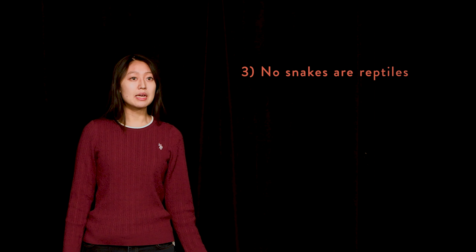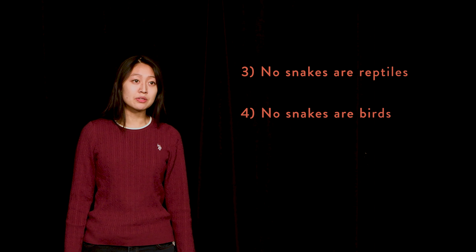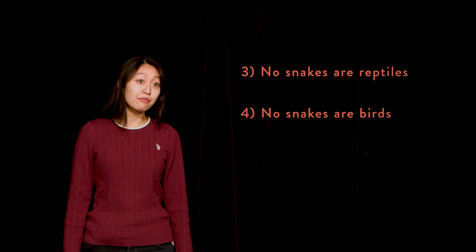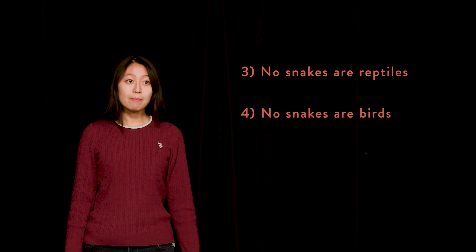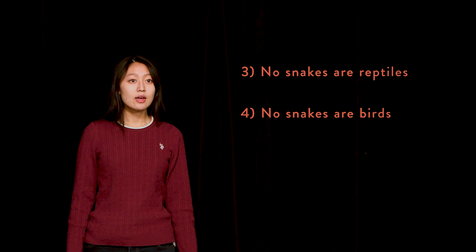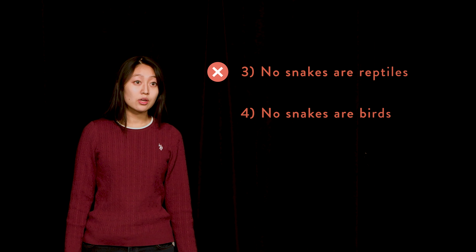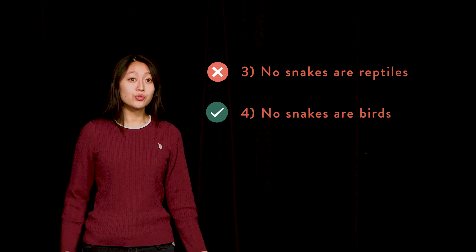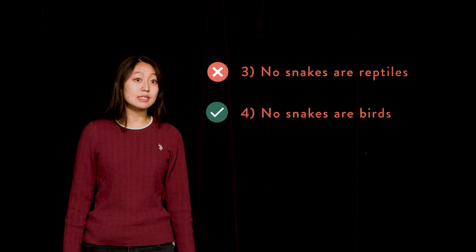Here are some examples of Universal Negative propositions. Three: 'no snakes are reptiles.' Four: 'no snakes are birds.' Propositions three and four are both examples of the Universal Negative. But once again, there is an important distinction: three is false, whereas four is true. We can see from four that a negative statement is not the same thing as a false statement.